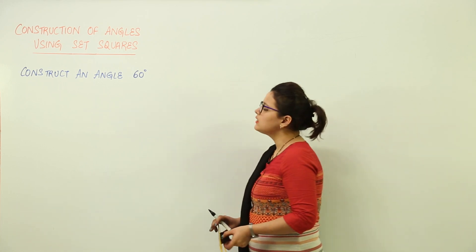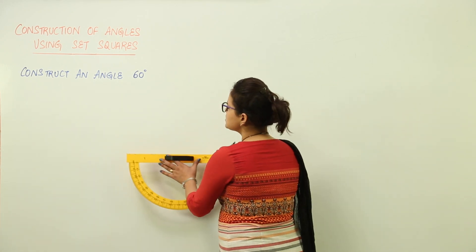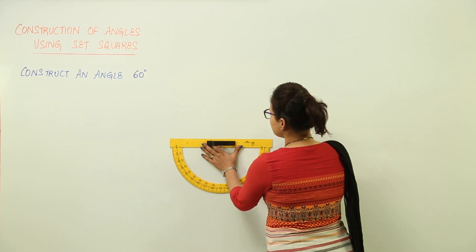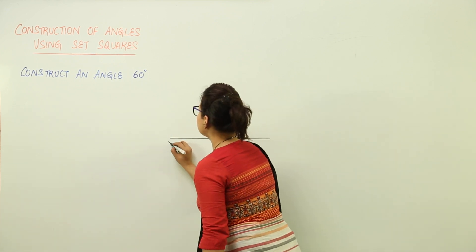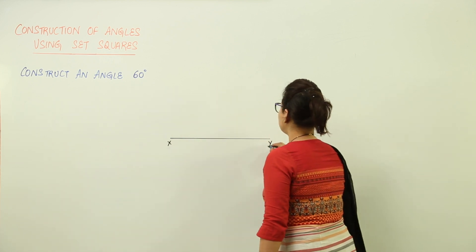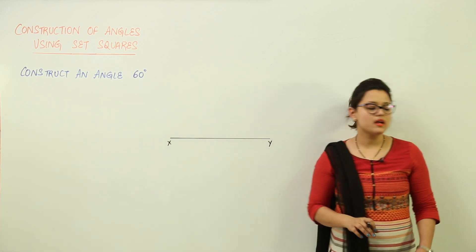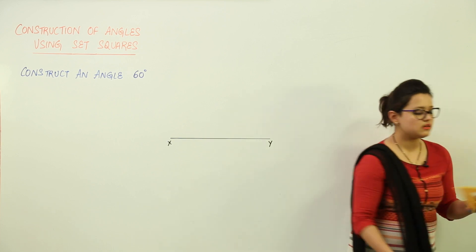Now, we are drawing the angle of 60 degrees. For this, we draw a straight line using a ruler like this. The straight line can be named like this, XY, and now we have to construct the angle of 60 degrees.